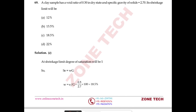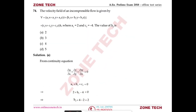For a clay sample with given void ratio e and specific gravity G = 2.70: at the shrinkage limit, degree of saturation S = 1. Using the relation Se = wG with S = 1, the shrinkage limit water content w = e/G = 18.5%. Answer: C.